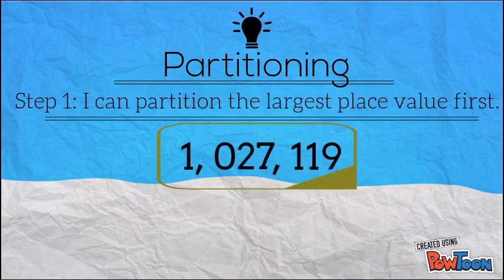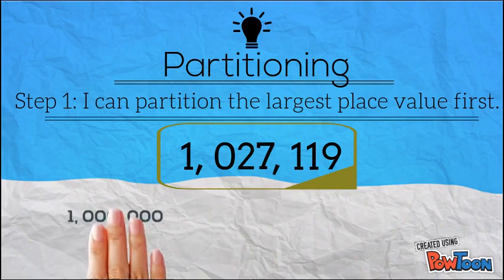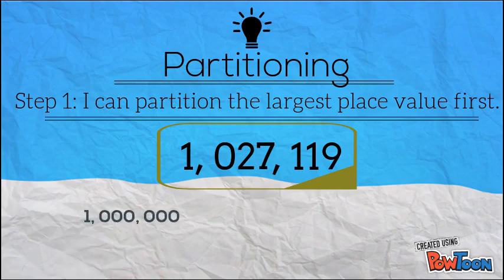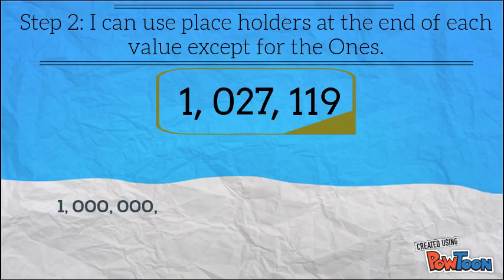Step 1: I can partition the largest place value first. We always start on the left with the largest place value and write the number one. These numbers here are replaced with zeros as placeholders, so we have one million. That was nice and simple.